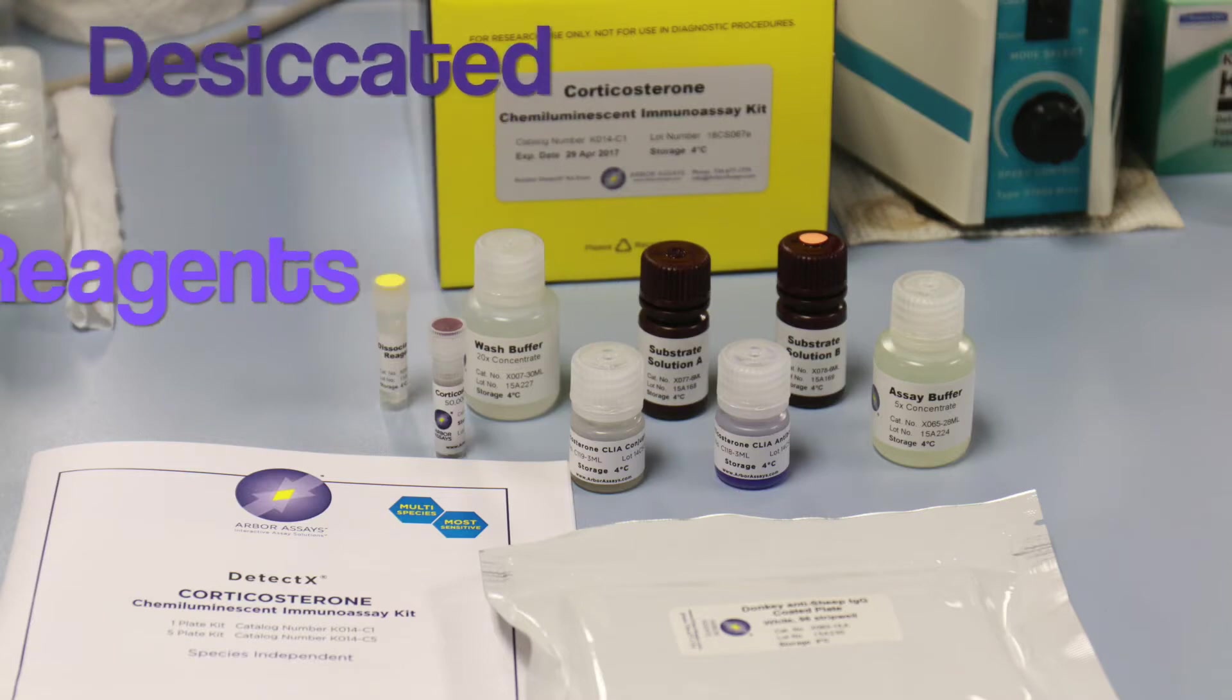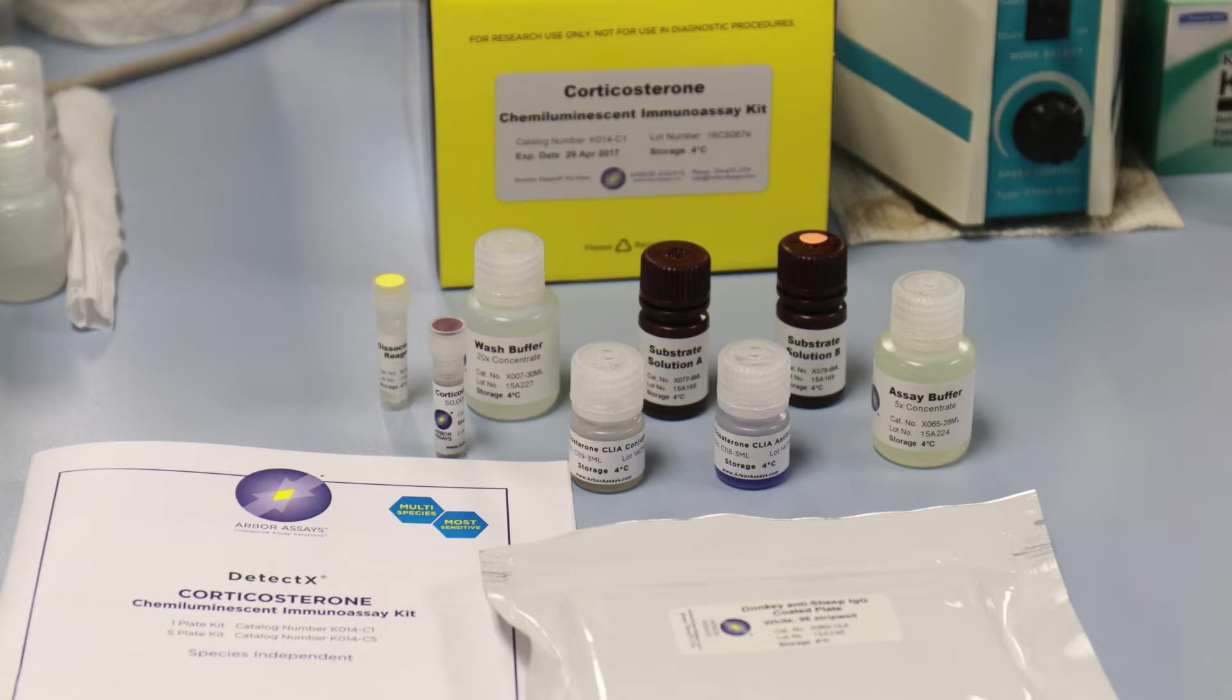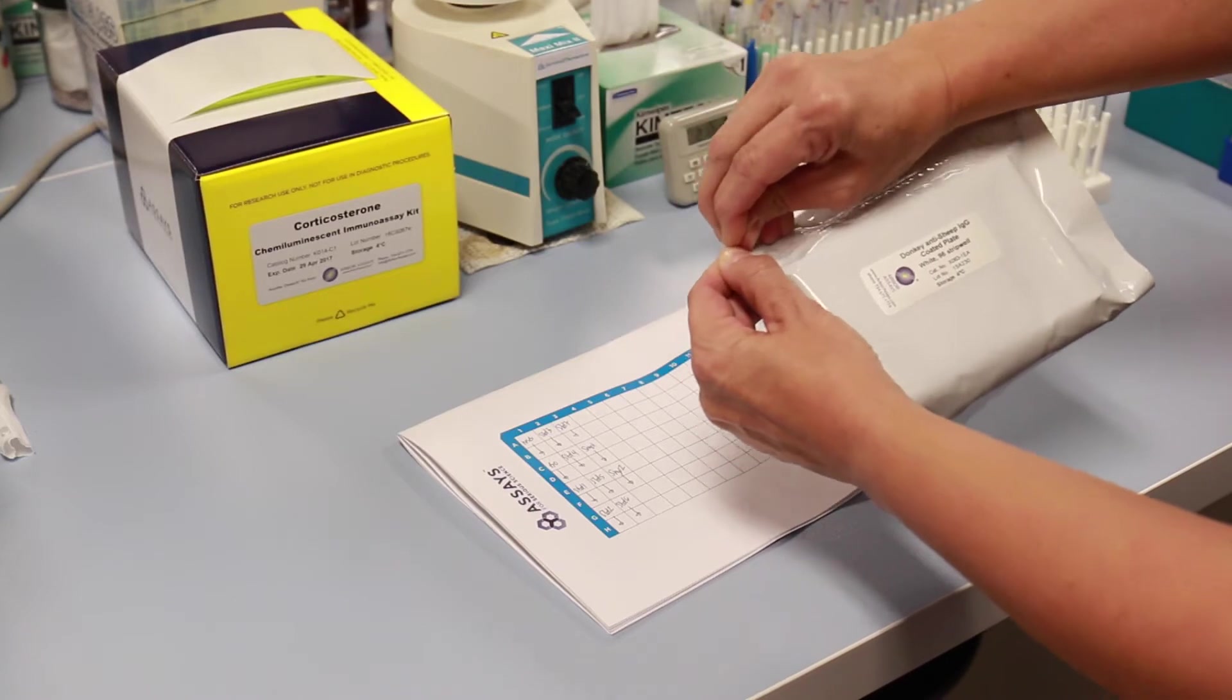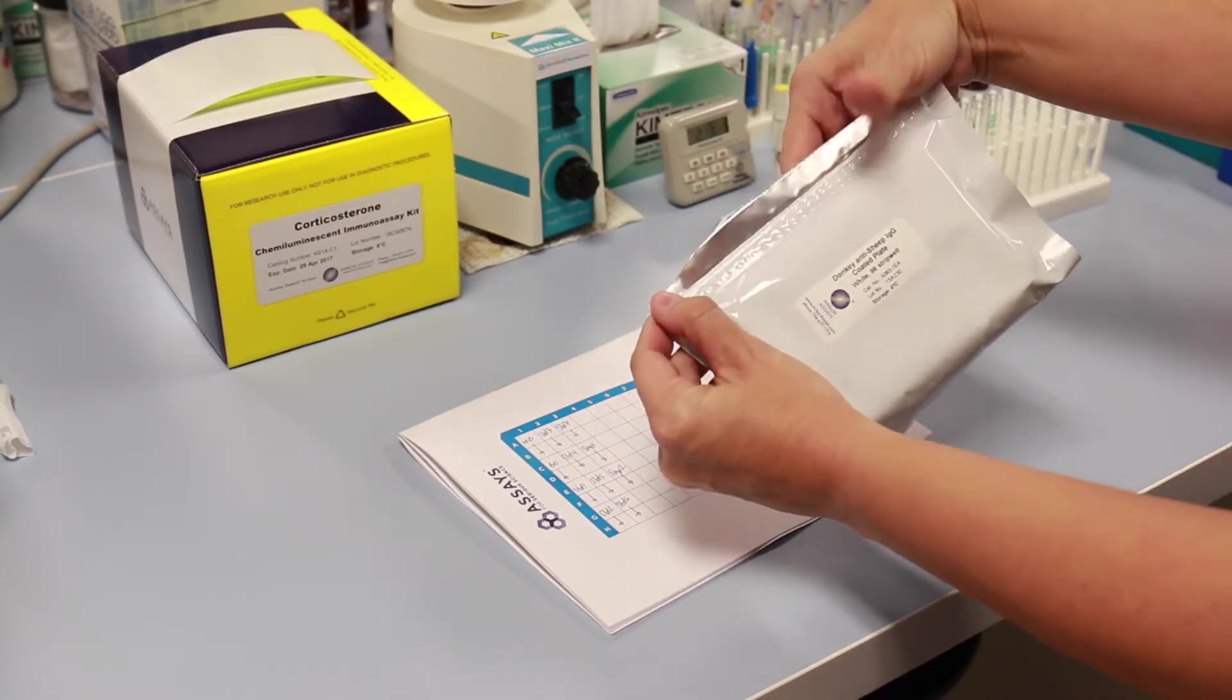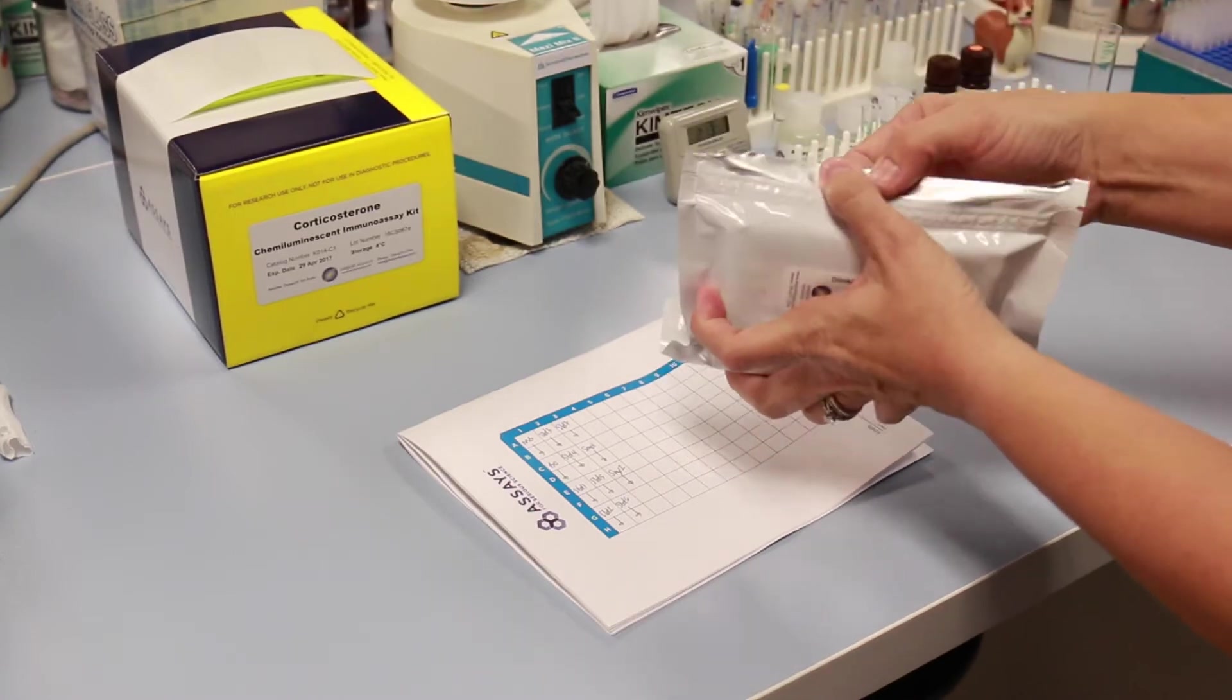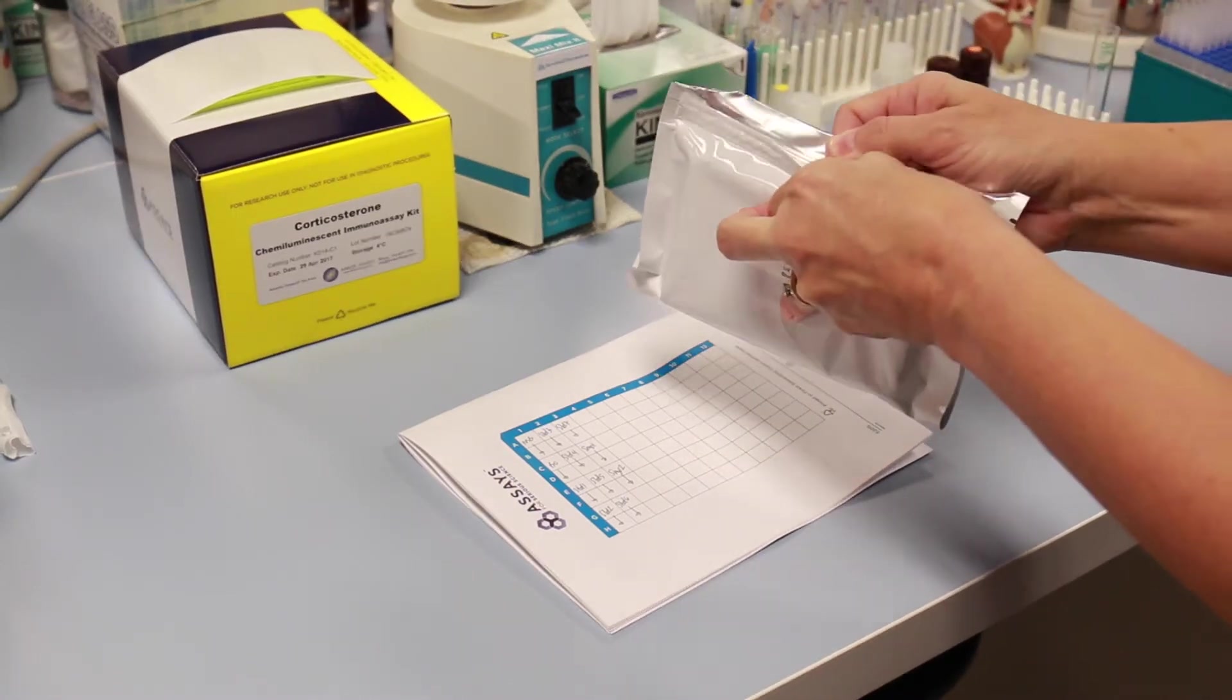Desiccated reagents: Allow any components that contain desiccants, such as our DetectX coated immunoassay plates, to warm completely to room temperature. Opening desiccated packs prior to reaching room temperature will allow warm, damp air to settle on the cold component and hydrate it. This may damage the component.